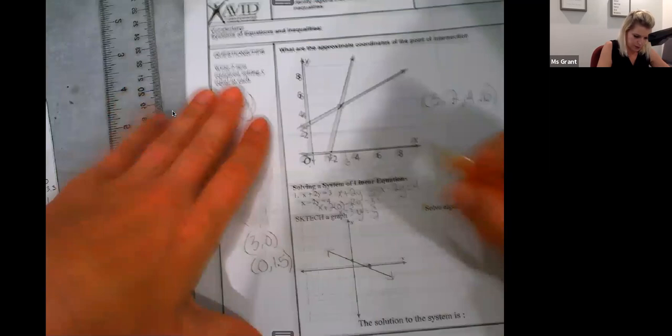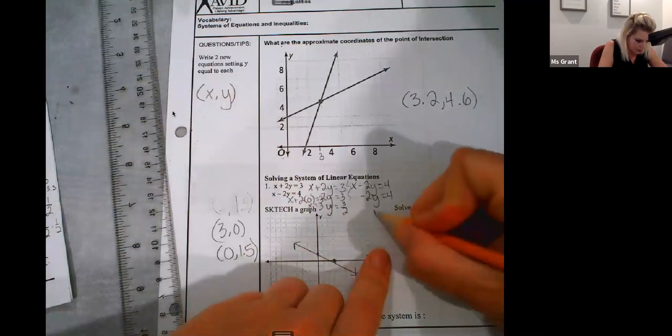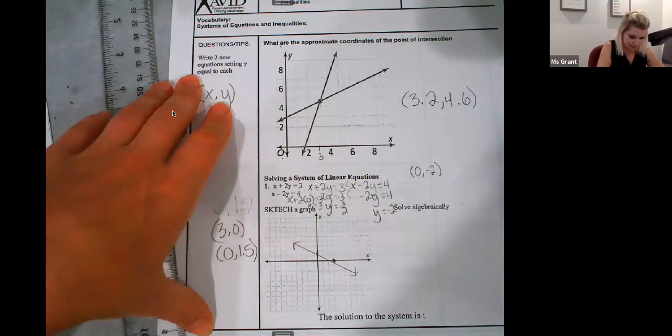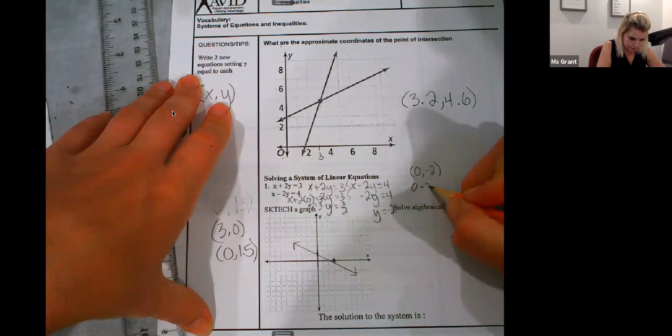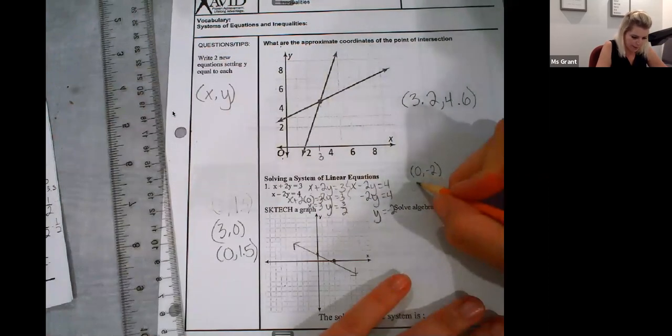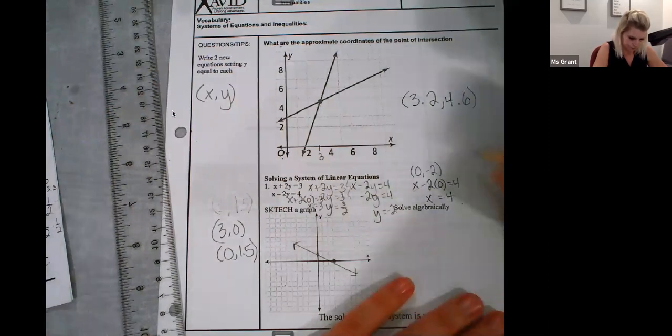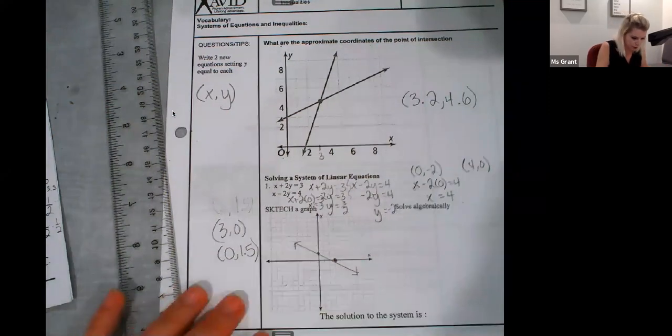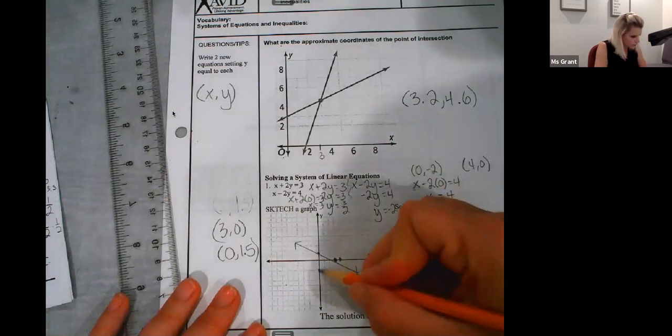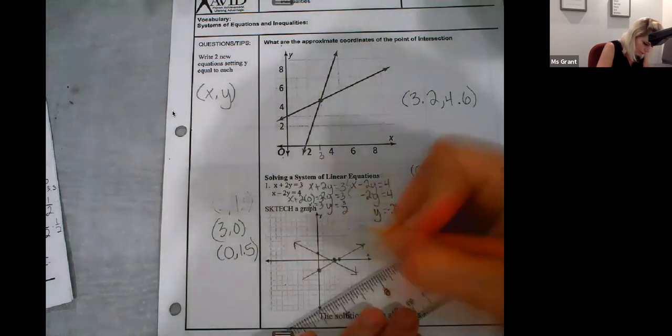Second, let's plug in 0 for X. 0 is X. Negative 2 equals 4. Y equals negative 2. There's my Y intercept. To find my X intercept, I plug in 0 for Y. X equals 4. So, those two points, 4, 0, and 0, negative 2.